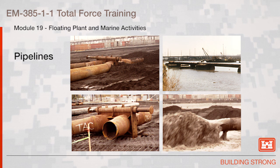These images show different types of pipelines associated with the dredging process. Floating pipelines are sensitive to wave motion and block vessel traffic. Submerged pipelines allow vessel traffic to pass but are difficult to monitor for leaks. Land pipelines are easy to monitor for leaks and splits allow multiple discharge locations into the disposal area.